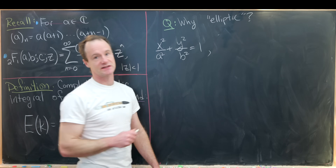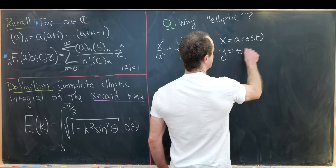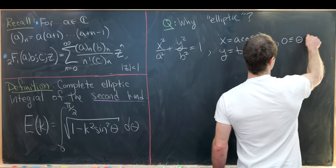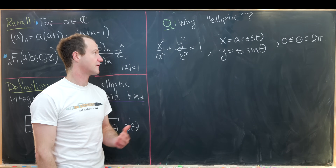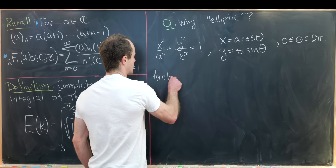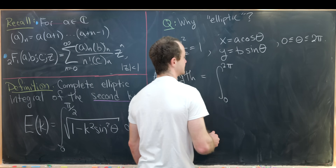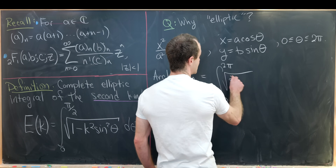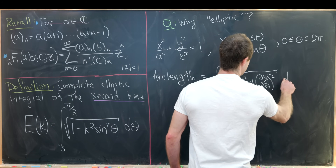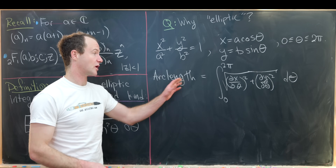We can parametrize this ellipse with x = a cosθ and y = b sinθ. In order to trace the entire ellipse, θ runs between zero and 2π. Now we can apply the arc length integral formula, giving us the arc length as the integral from zero to 2π of the square root of (∂x/∂θ)² + (∂y/∂θ)² dθ. That's something you go over in multivariable calculus.